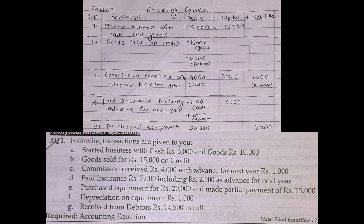BBS First Year, Chapter 3: Accounting Process — Accounting Equation. Long Question 1: following transactions are given, and the accounting equation format is required. The format is: Assets equal to Capital plus Liabilities, with S&N Particulars columns.